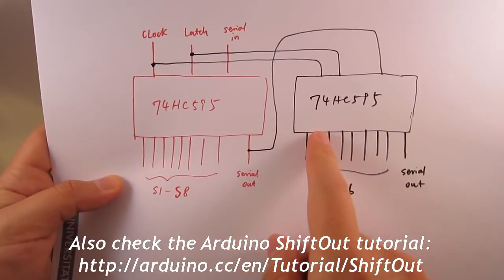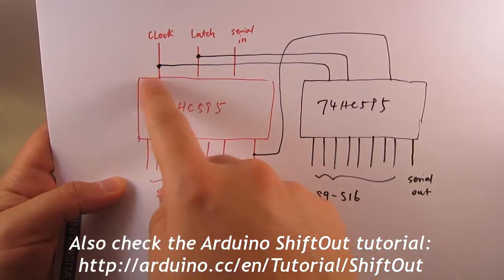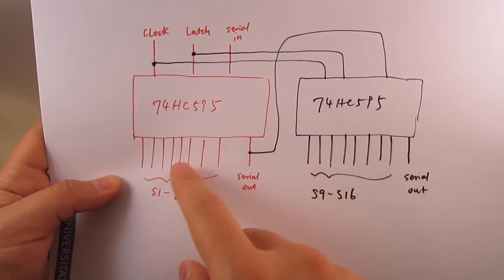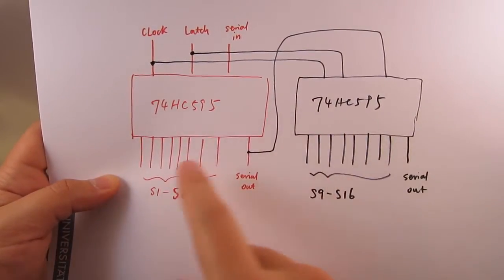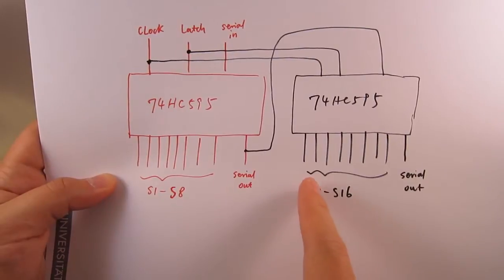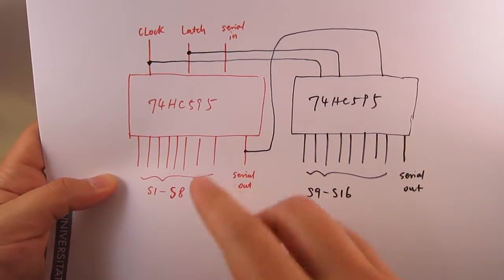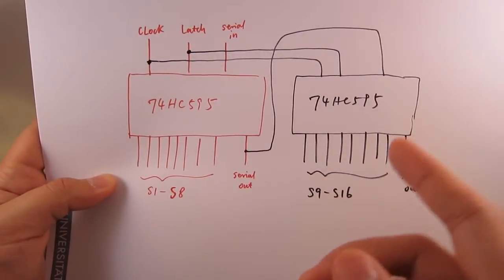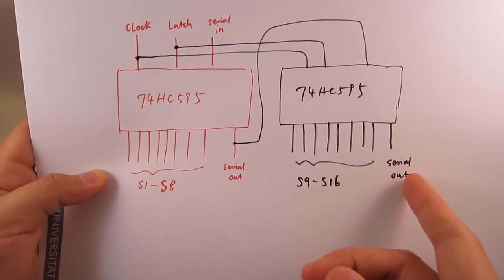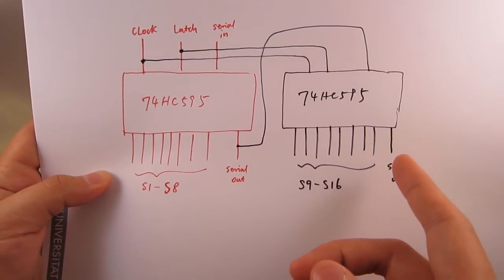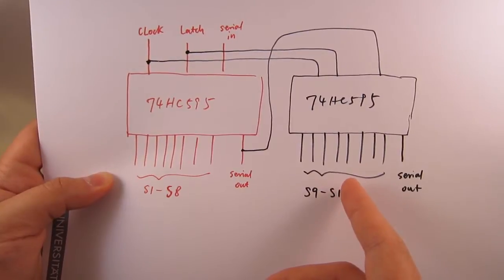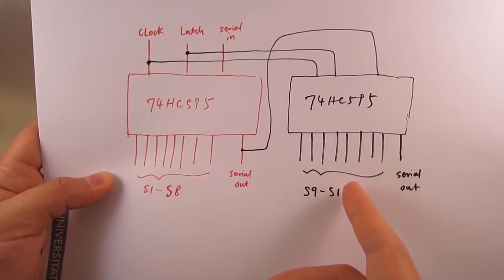By simply cascading additional shift registers, you can use exactly the same three digital pins but send more serial bytes to control more stations. This way you can enable 16, 24, or pretty much any number of stations you want, providing a very economic way to expand to many stations or zones.